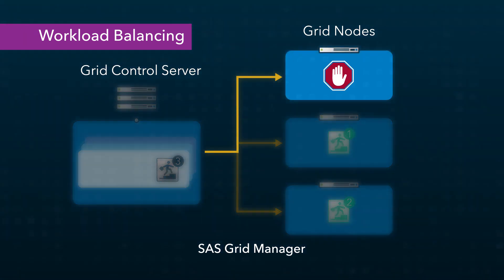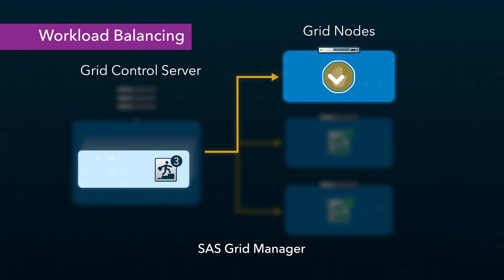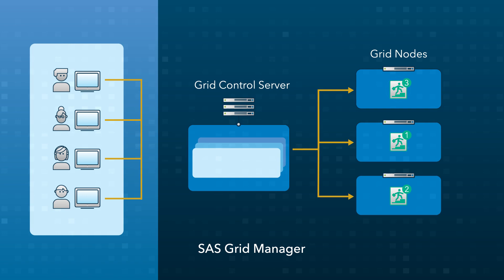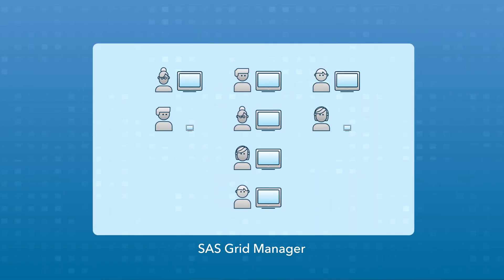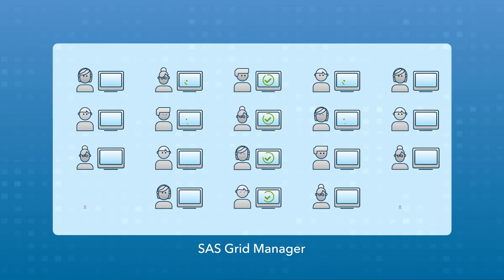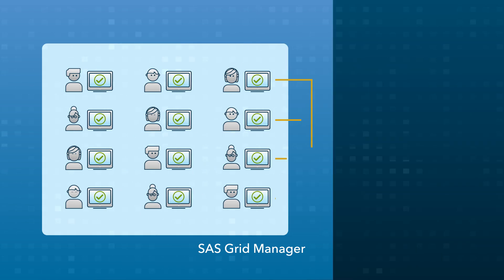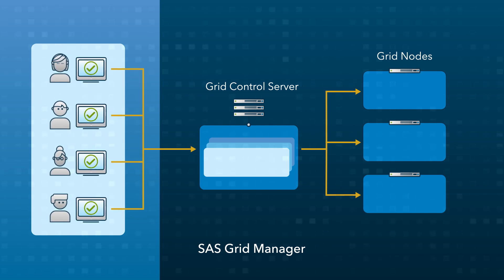If no grid nodes are available for execution, the jobs stay in the queues until a node becomes available. As a result, the workload from all users is balanced to enable jobs to process without overloading or competing for resources in a heavily used system. Managing the workload and efficiently using available resources results in an overall increase in analysis and reporting throughput.